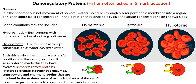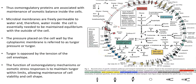Both hyperosmotic and hypoosmotic environments impose a stressful situation on the cells growing in them. In order to cope with this, cells have evolved certain osmoregulatory proteins that play a role in protection against changes in osmotic potential and maintain the osmotic balance of the cells. These refer to diverse biosynthetic enzymes, transporters, and channel proteins involved in the maintenance of osmotic balance, helping cells cope with osmotic stress under hyperosmotic or hypoosmotic conditions.